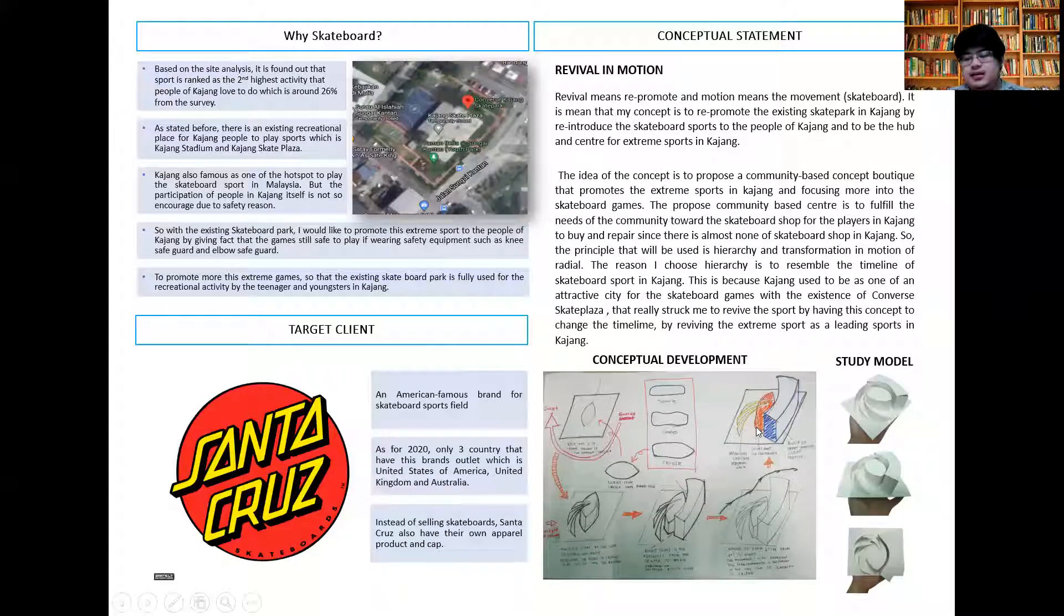This is categorized into three: a block for client purposes, the center is the courtyard for the skateboard players, and the strips are facilities like cafe and pedestrian walk. This is my study model.